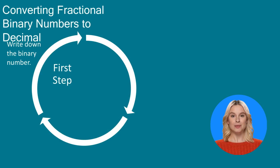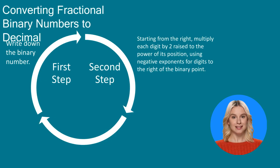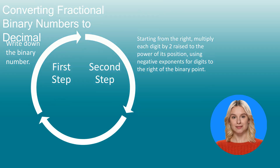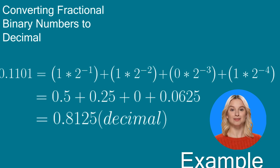Now let's move on to fractional binary numbers. To convert a fractional binary number to a decimal number, follow these steps. Step 1: Write down the binary number. Step 2: Starting from the right, multiply each digit by 2 raised to the power of its position, using negative exponents for digits to the right of the binary point. Step 3: Add the results together. For this example, we have the binary number 0.1101, and the decimal equivalent is 0.8125.